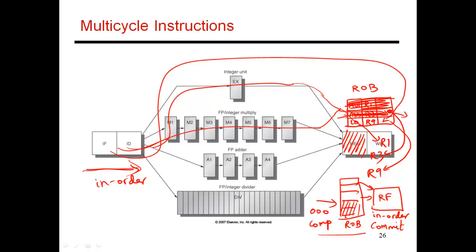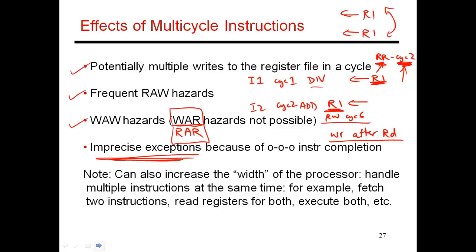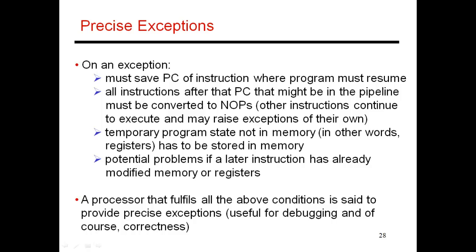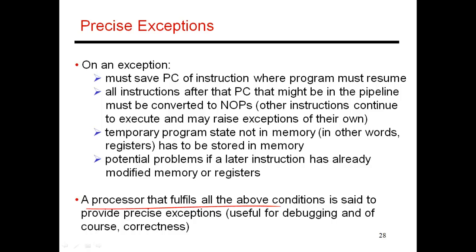So that's how we dealt with this final problem. This is where I've defined an exception and I've said that a processor fulfills, if it fulfills these conditions, then it provides precise exceptions. I've also shown how to deal with each of these problems. So the multiple writes to the register file is handled by throwing more resources at the problem. Write after write hazards are done by detecting the hazard during the instruction decode stage, and imprecise exceptions are being handled by buffering the results as they complete in the reorder buffer. And then they are made permanent in the register file in program order with an in-order commit process.